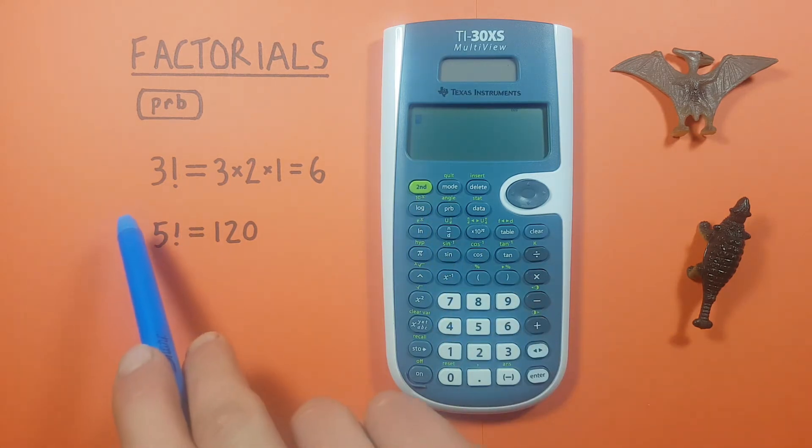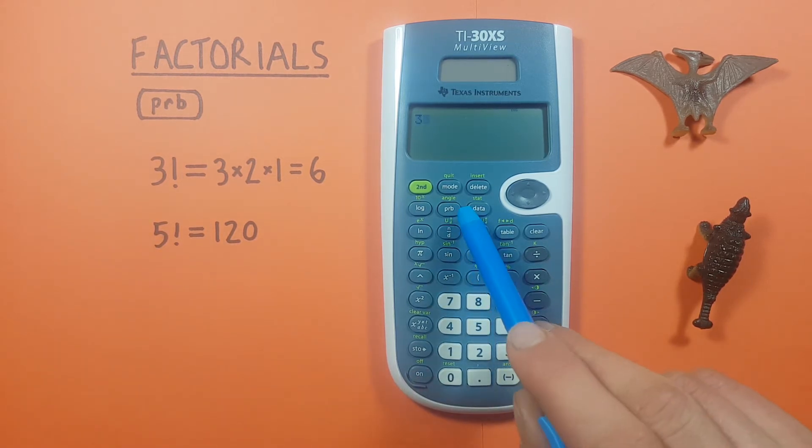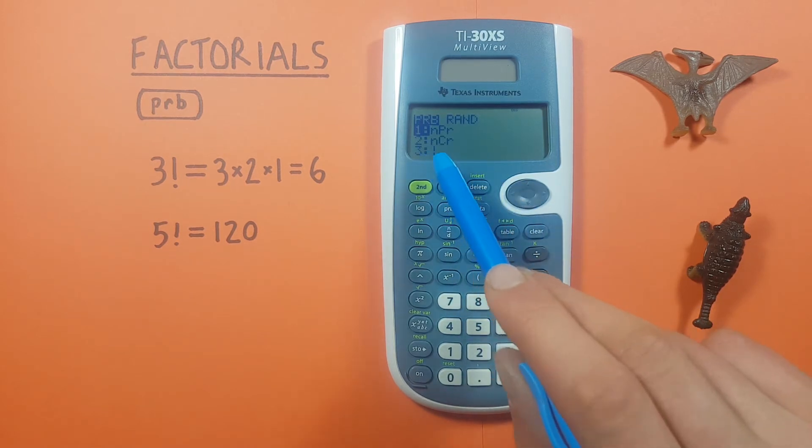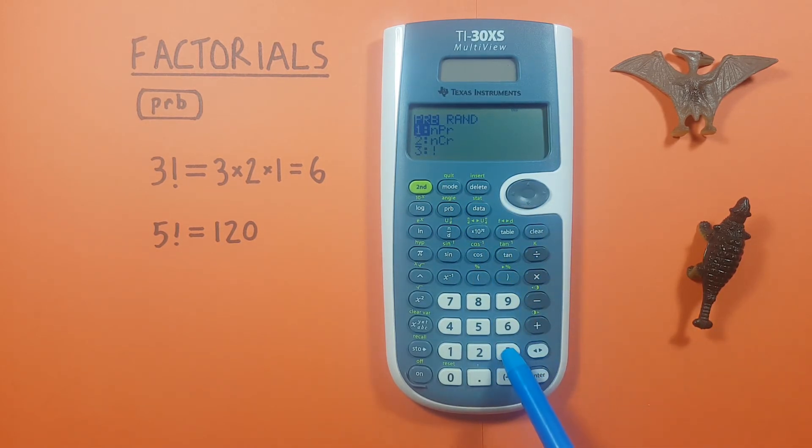So if we want to solve say 3 factorial we can start by entering the 3, pressing the PRB key and then either scrolling down to 3 and pressing enter or just pressing the 3 key.